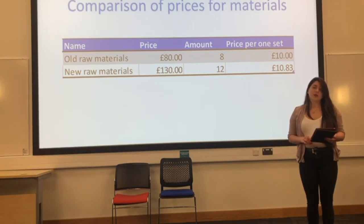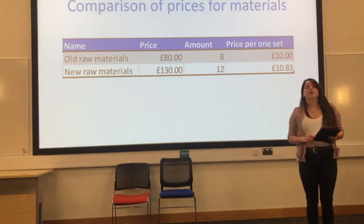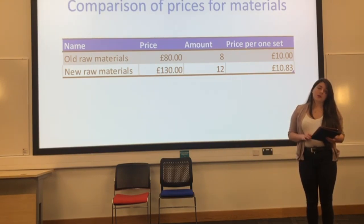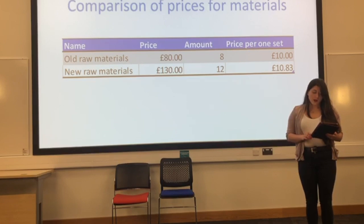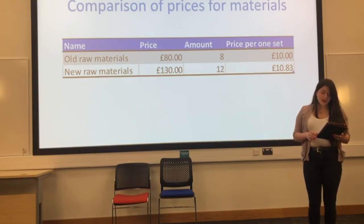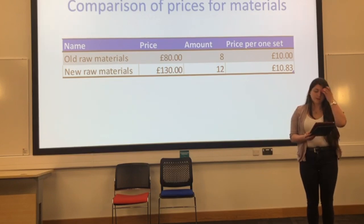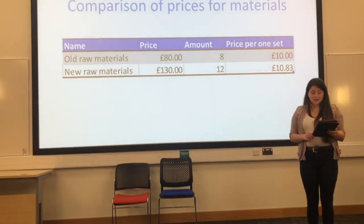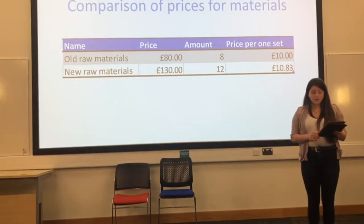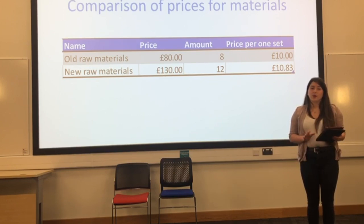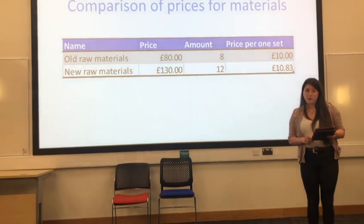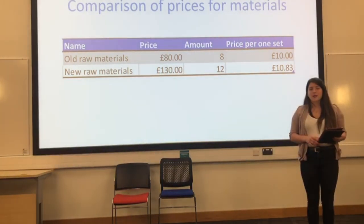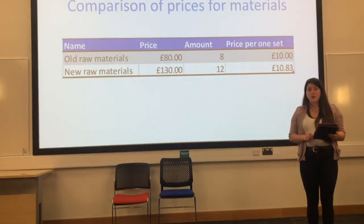That gives us around £250 to £500 loss in sales. To improve our supply chain, we decided to buy new raw materials in four colors for £130 each, and blue stickers for £70, as we ran out of them. For the old materials, we paid £80 for eight sets, so it is about £10 for one set. For the new ones, we paid £130 for 12 sets, giving us a price of £10.83 per set. We can see that the price is slightly higher for new raw materials.